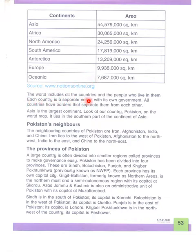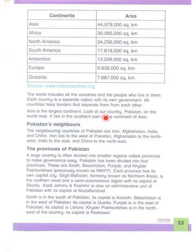The world includes all the countries and the people who live in them. Each country is a separate nation with its own government. All countries have borders that separate them from each other. Asia is the largest continent. Look at your country, Pakistan, on the world map — it lies in the southern part of the continent of Asia.